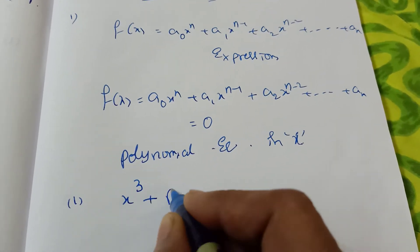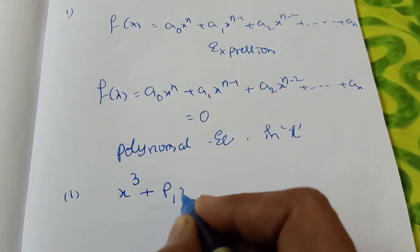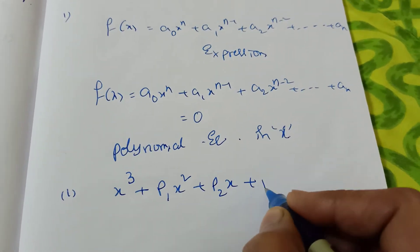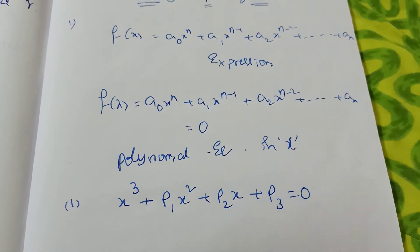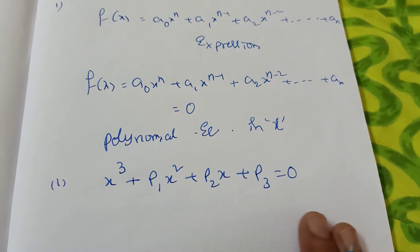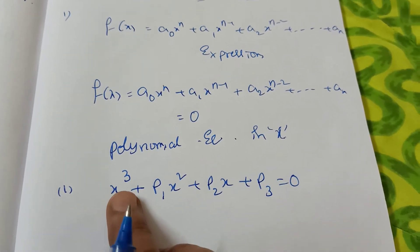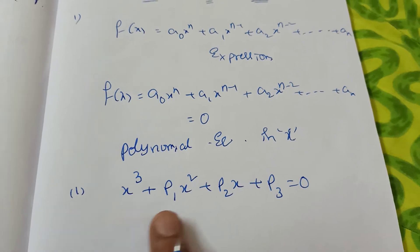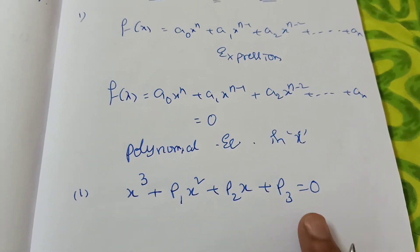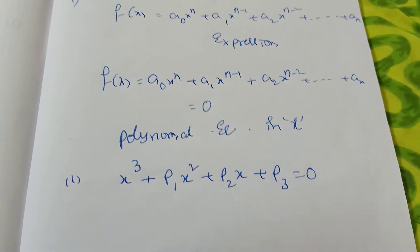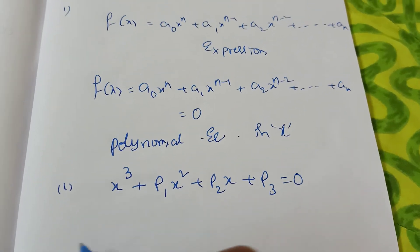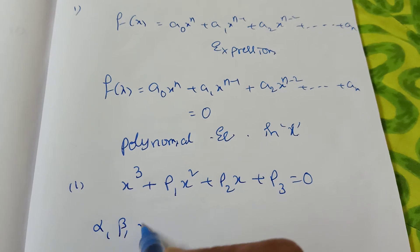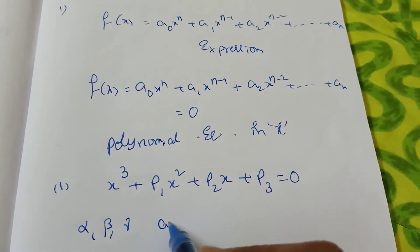What is the general form of a cubic equation? It is x³ + p₁x² + p₂x + p₃ = 0. The highest power is three, that's why it's called a cubic equation. Suppose the roots are alpha, beta, gamma.